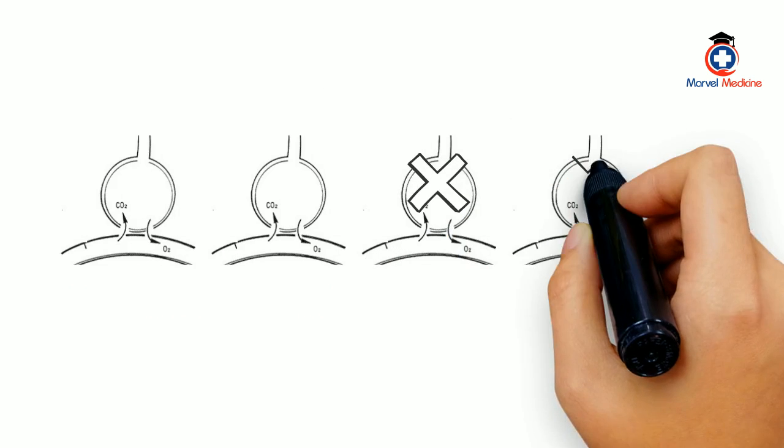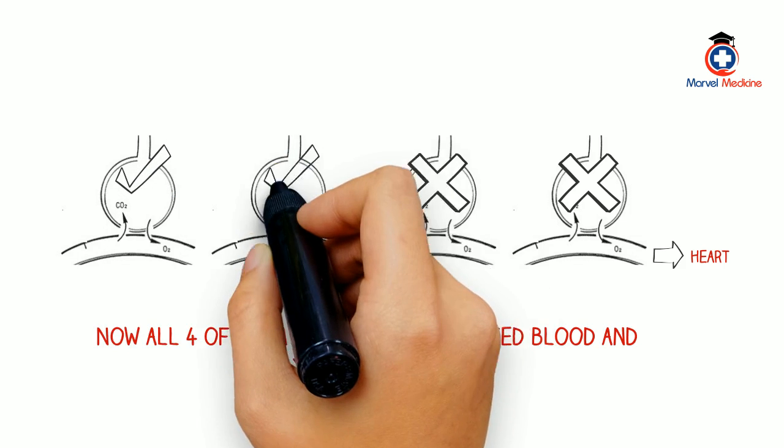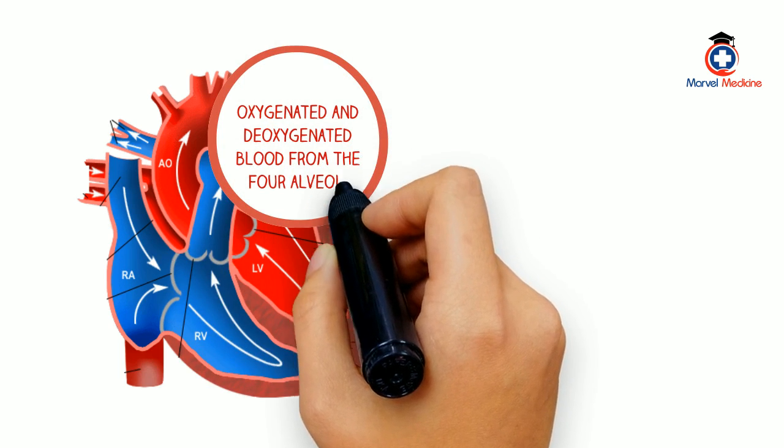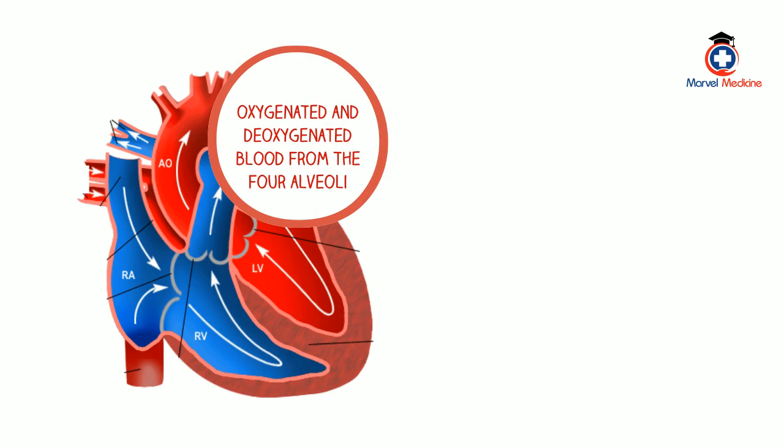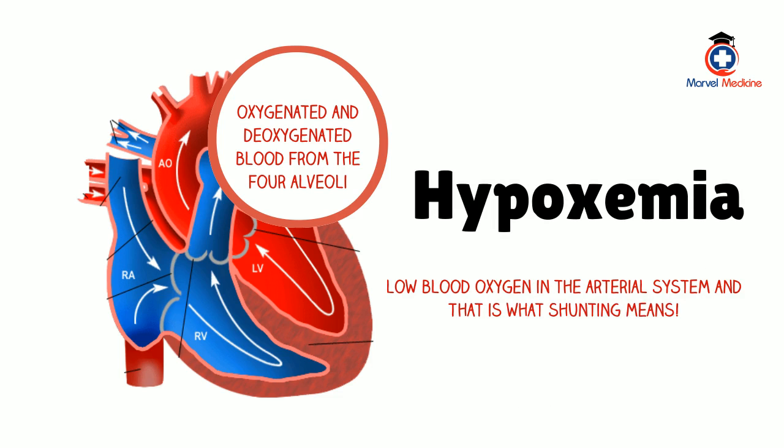Well, what if only two out of the four alveoli are working properly due to any reason like atelectasis or mucus plugging? Now, all four of them get deoxygenated blood and only two pick up oxygen. The blood that's returning to the heart has a mixture of both oxygenated and deoxygenated blood now from the four alveoli. This causes hypoxemia, basically low blood oxygen in the arterial system, and that is what shunting means.